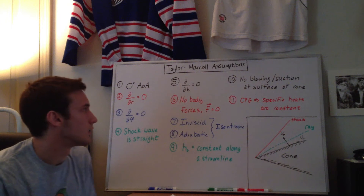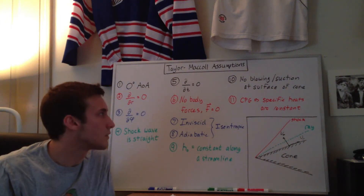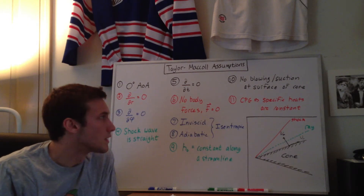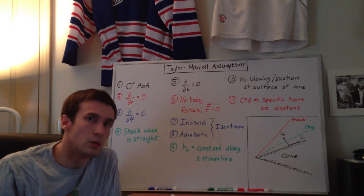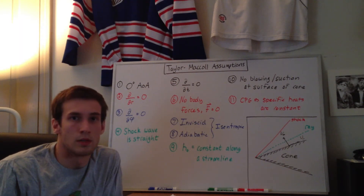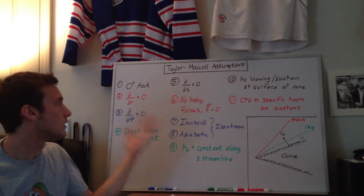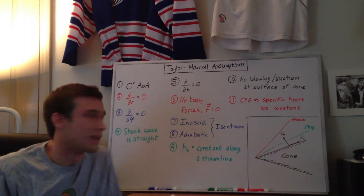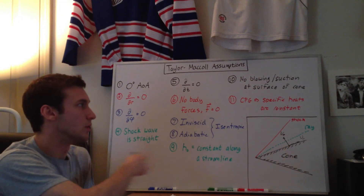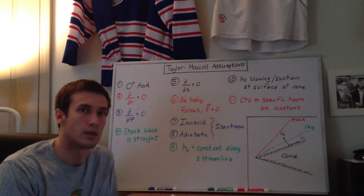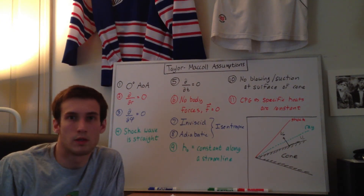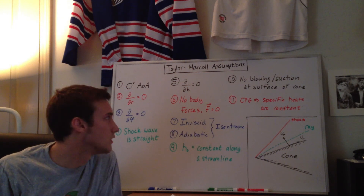The last assumption is that it's a calorically perfect gas, or CPG, which means the specific heats are constant — CP and CV are constant. These come into play when talking about the ratio of specific heats, gamma equals CP over CV, and those appear in the final Taylor-McCall equation you'll see in the derivation. So this is just an overall video about the assumptions we make. I know it seems like a lot and it's kind of boring, but it's really important to know the limiting factors, because you can't use this for any type of flow. My next video will go through the actual derivation — the continuity equation, et cetera.